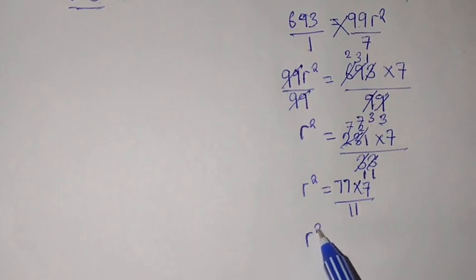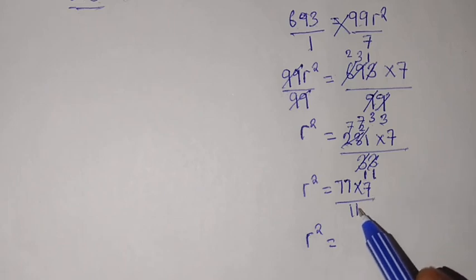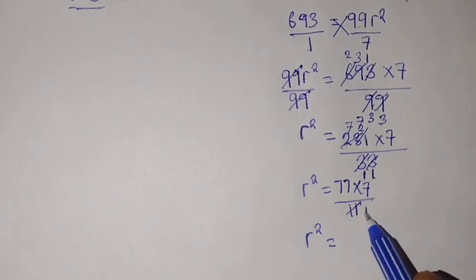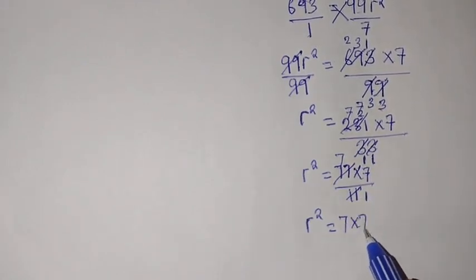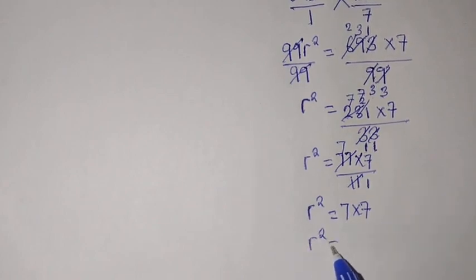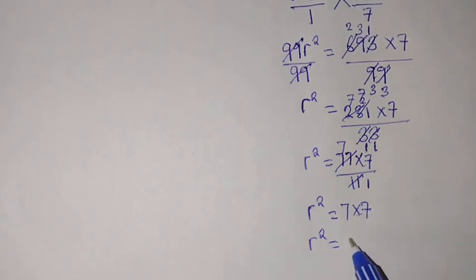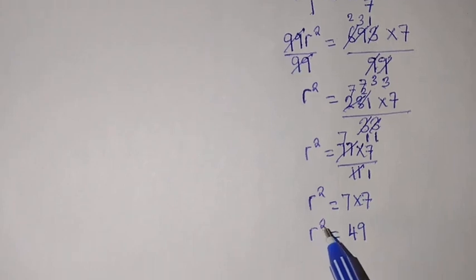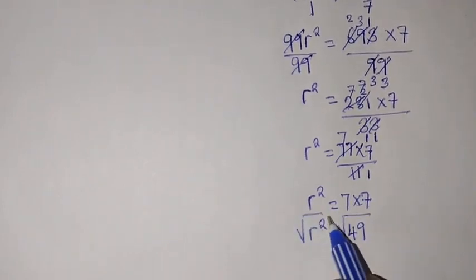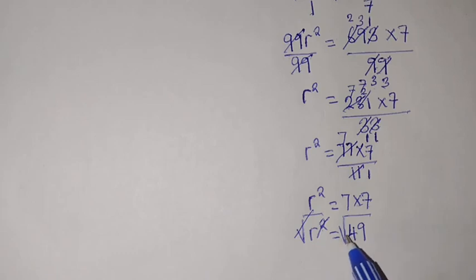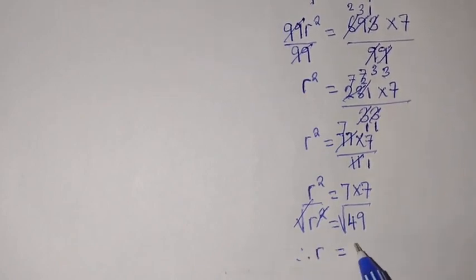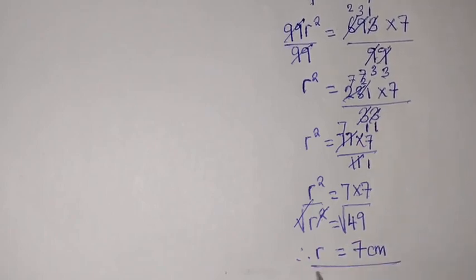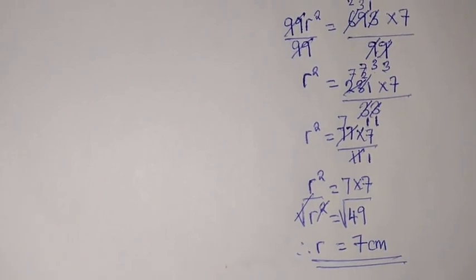We can say R squared equals 7 times 7. This is 49. Now this one is R squared. To get rid of the square, we are going to introduce a square root. Even this side, a square root. This 2 and the square root will cancel. Then the square root of 49 is 7. Therefore, R equals 7 cm. This was the value of the radius. We have answered this question.